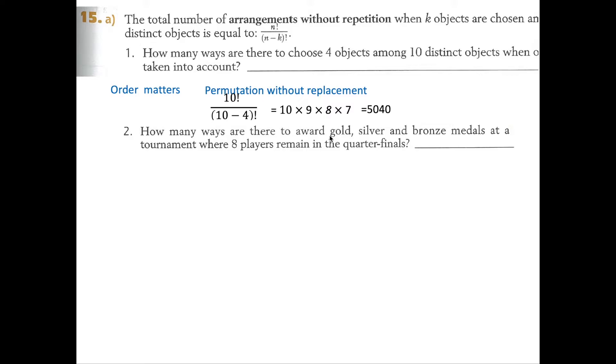Two. How many ways are there to award gold, silver, and bronze medals at a tournament where eight players remain in the quarterfinals? We have eight players. If you think of it logically, you have eight that can get gold, and then you have seven left for silver and six left for bronze. The order totally matters, so it's 8 times 7 times 6.